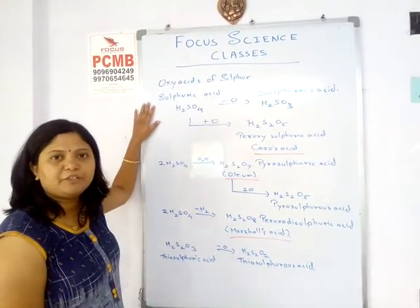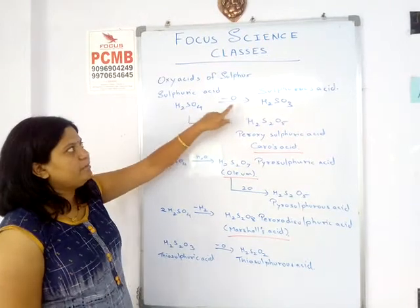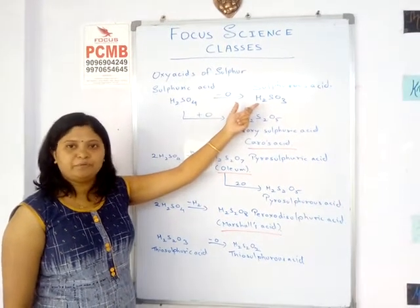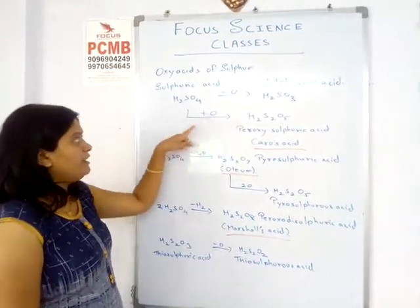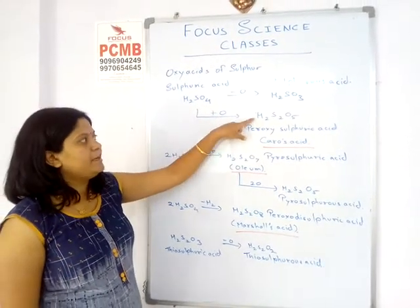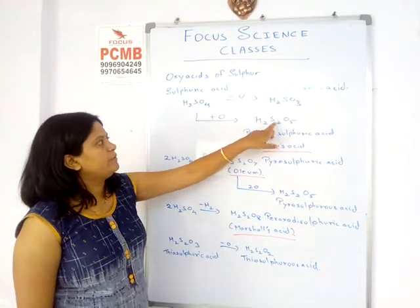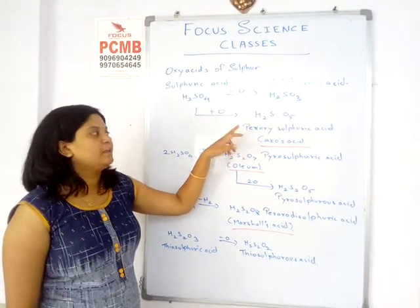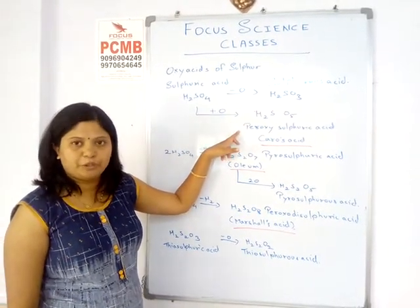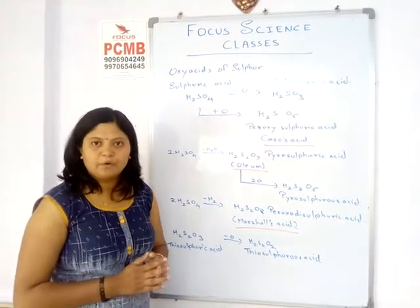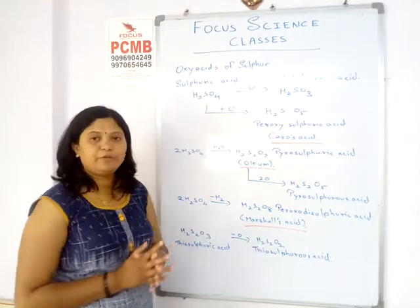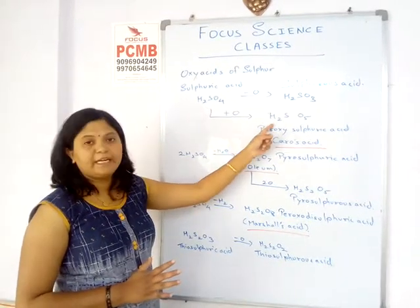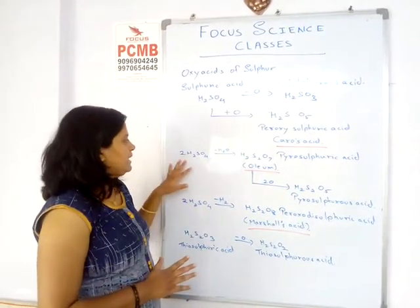Sulfuric acid (H₂SO₄) is also known as the king of chemicals. When we remove one oxygen atom from sulfuric acid, we get sulfurous acid — same principle as we learned in phosphorus. If we add one oxygen atom to H₂SO₄, we get H₂SO₅. This H₂SO₅ is also called peroxysulfuric acid, also known as Caro's acid.